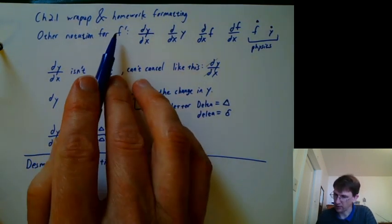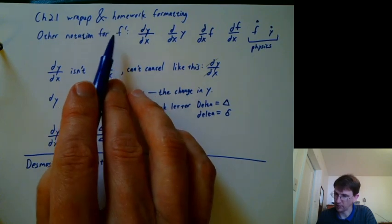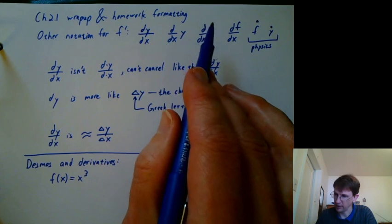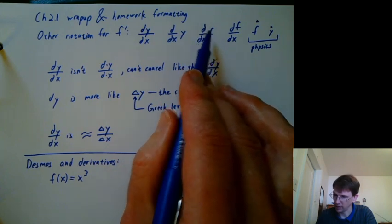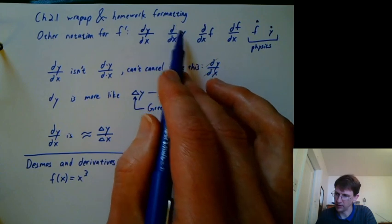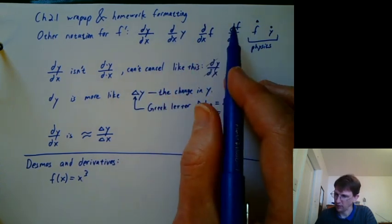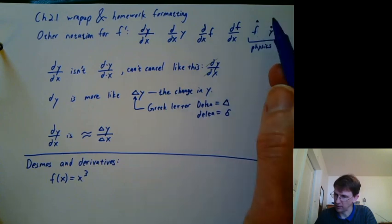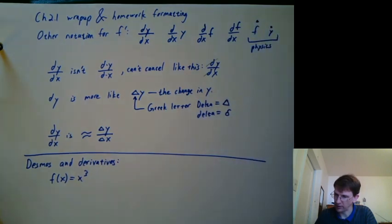Some other quick notation for f prime includes dy over dx, d over dx y, d over dx f. We're not really multiplying here. We're just writing them next to each other saying d over dx works on y, or df over dx. Or in physics, you might write a dot above f dot or y dot.